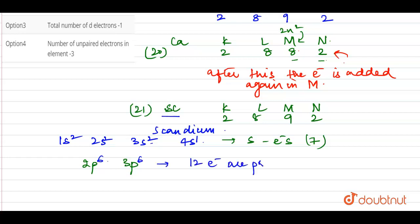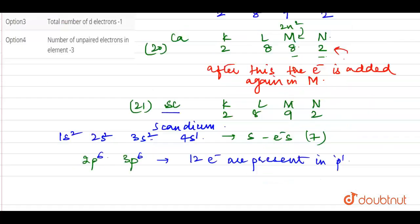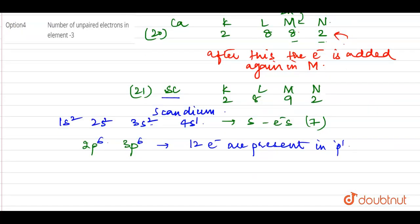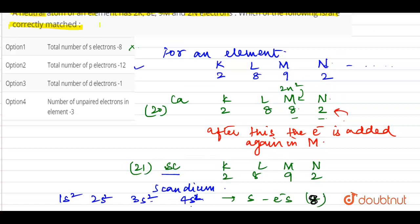In 2p there are 6 electrons, and in 3p there are also 6 electrons, so total 12 electrons are present in P orbitals. The second statement is correct. For option number 3, the total number of D electrons — in this case, we have 3d1 and 4s2. So the D electrons should be 1, not 8. Wait — actually looking again, the first statement about S electrons: with configuration after Argon being 3d1 4s2, the S electrons count is 8, so the first statement was actually correct.